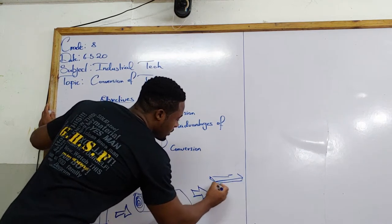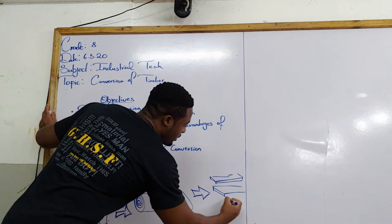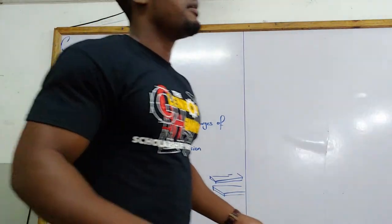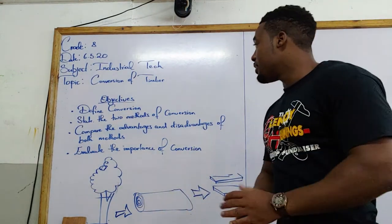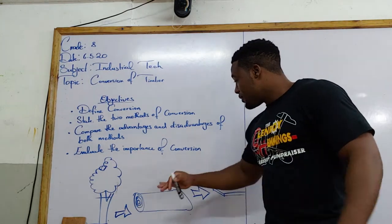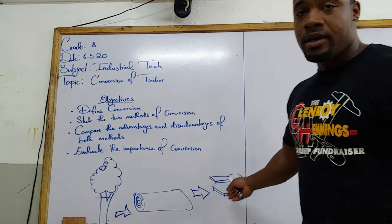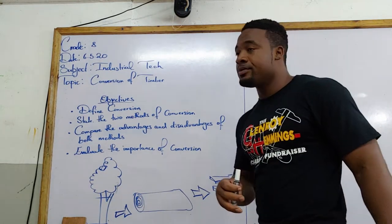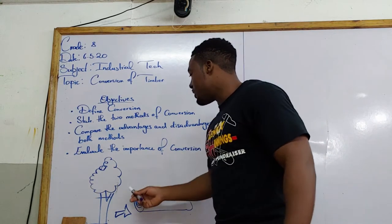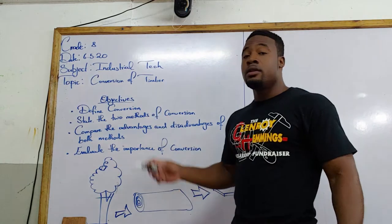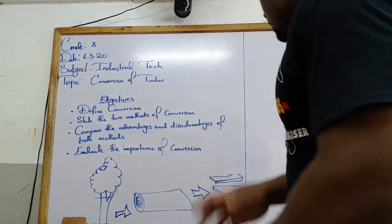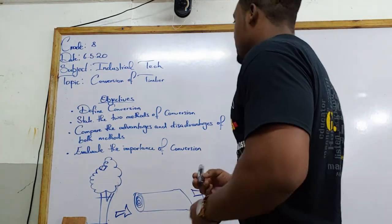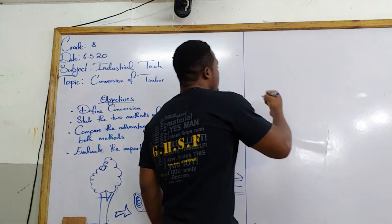From our logs we get two-by-fours, four-by-fours, different types of boards and blocks, which are then used to create our different pieces of work. So conversion is converting our logs into usable or marketable sizes. Now there are two main methods of conversion. The first method is known as plain sawn.